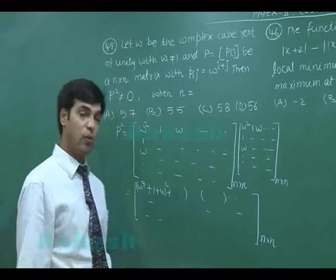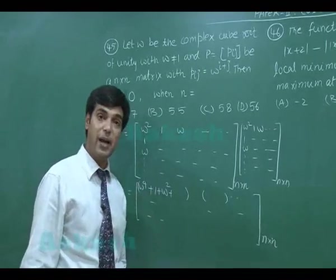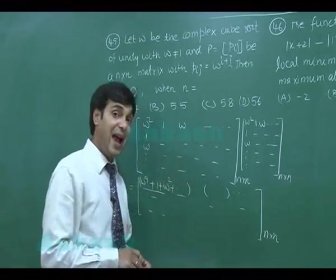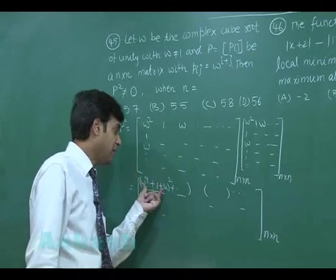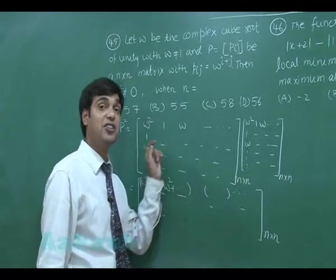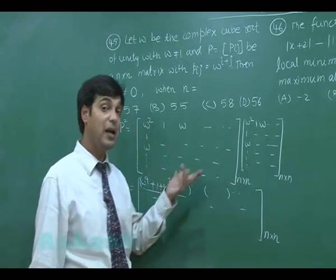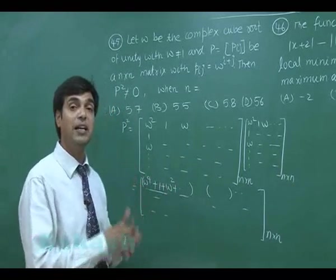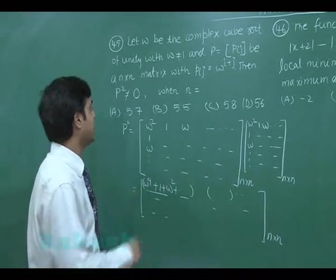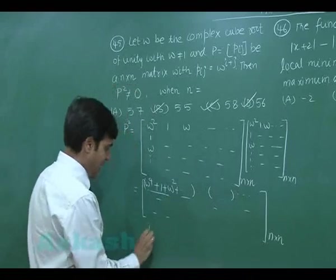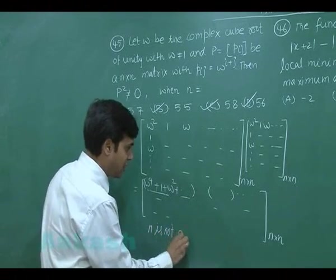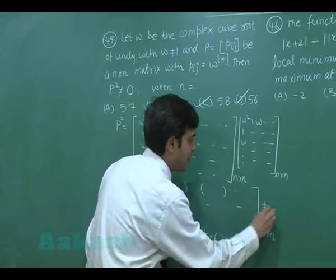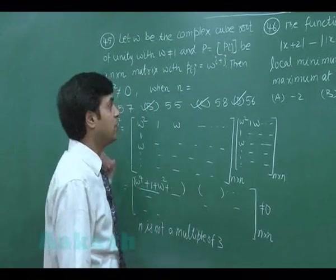For P², multiplying the matrix by itself, each entry of the product involves sums like omega⁴ + 1 + omega² + ... The key observation is that 1 + omega + omega² = 0. So if the number of terms is a multiple of 3, all entries become 0, making P² = 0. Therefore, P² ≠ 0 when n is not a multiple of 3. The correct answers are B, C, D (n = 55, 58, 56 are not multiples of 3).